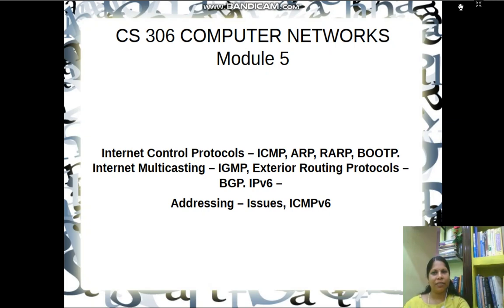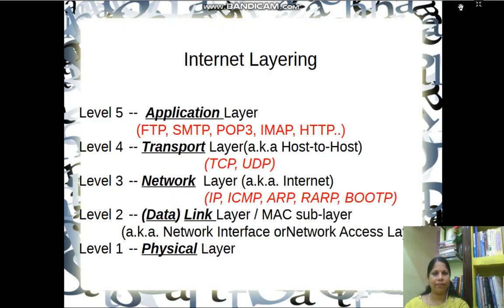Welcome to the video lecture series on computer networks. This is as per Kerala Technological University course code CS306. In this session we deal with module 5. As per the ISO-OSI reference model, the third layer is the network layer. This module is all about the various protocols of the network layer, namely IP (Internet Protocol), ICMP (Internet Control Message Protocol), and some other very important protocols that function along with IP for the functioning of the internet.